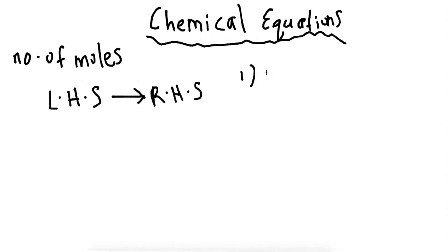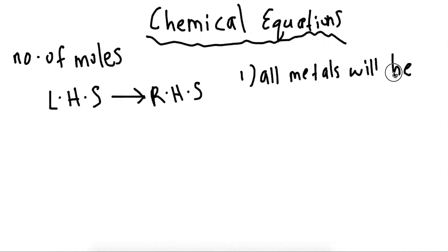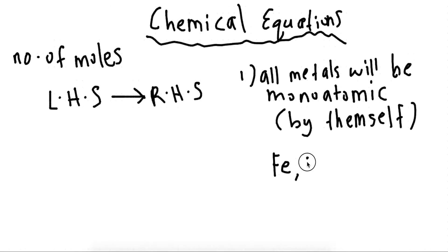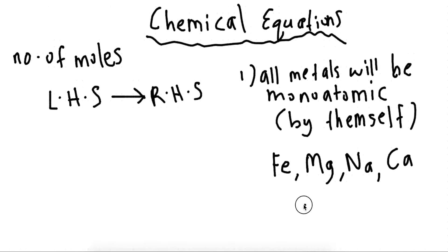The first rule: all metals will be monoatomic, meaning they will only have one atom. This is only when they are by themselves — when they are an element, not when they are a compound. If I have iron metal, it will be Fe. Magnesium metal will be Mg. Sodium metal will be Na. Calcium metal will be Ca. You don't express chemical equations with a charge like Ca2+. You express them by themselves like this.